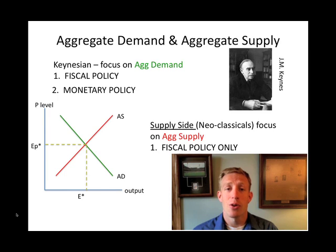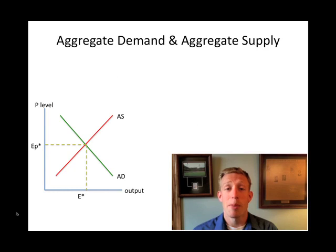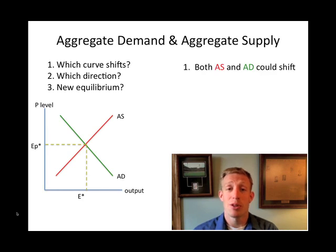Consider this situation: there is a terrorist attack in New York City and there's a significant disruption of the financial system — the banking and lending process. How is that going to affect the economy? We go through a comparative static process. It can affect either aggregate demand or aggregate supply, perhaps both. In this case, both curves would shift — people would be less willing to spend because of fear, and businesses would be interrupted because the cost of borrowing would go up. So both curves would shift to the left.